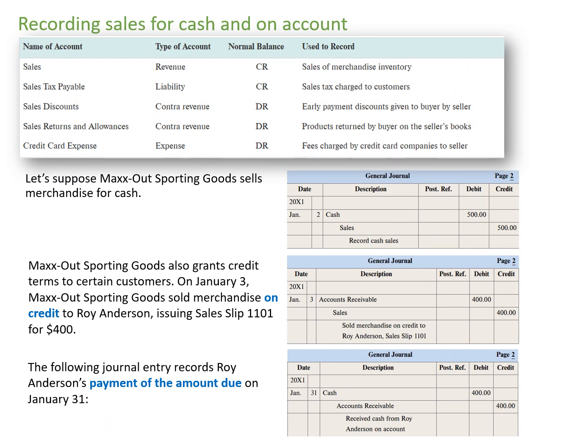We will now look at how sales for merchandising businesses are recorded when customers buy merchandise for cash or on credit. We have to set up new accounts we will be using for our accounting: sales, sales tax payable, sales discounts, sales returns and allowances, and credit card expenses.